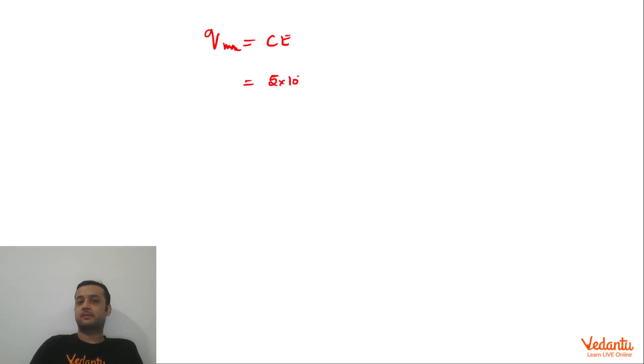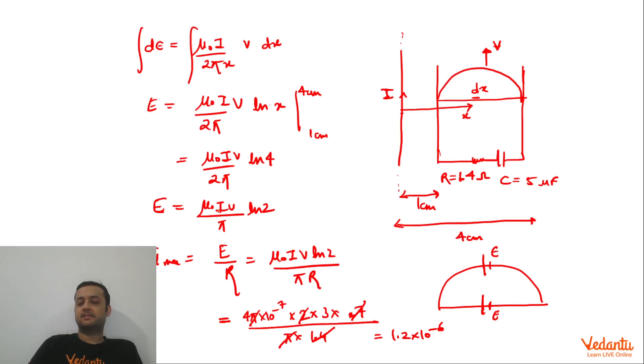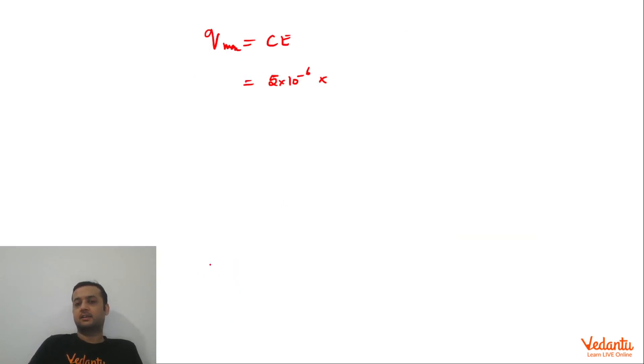Capacitance is 5 into 10 to the power minus 6. EMF value is constant. So this will be 1.2 into 10 to the power minus 6.